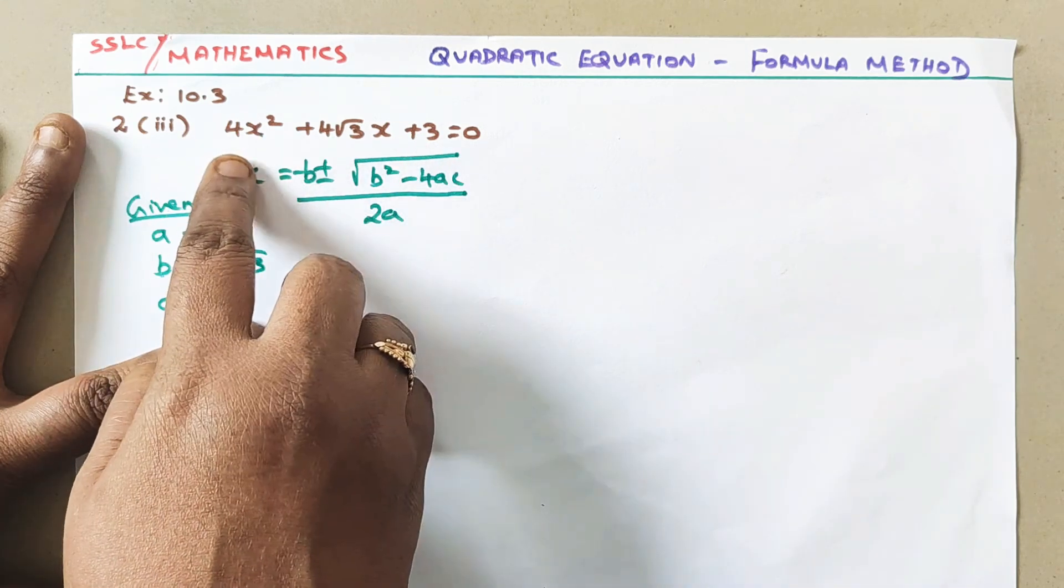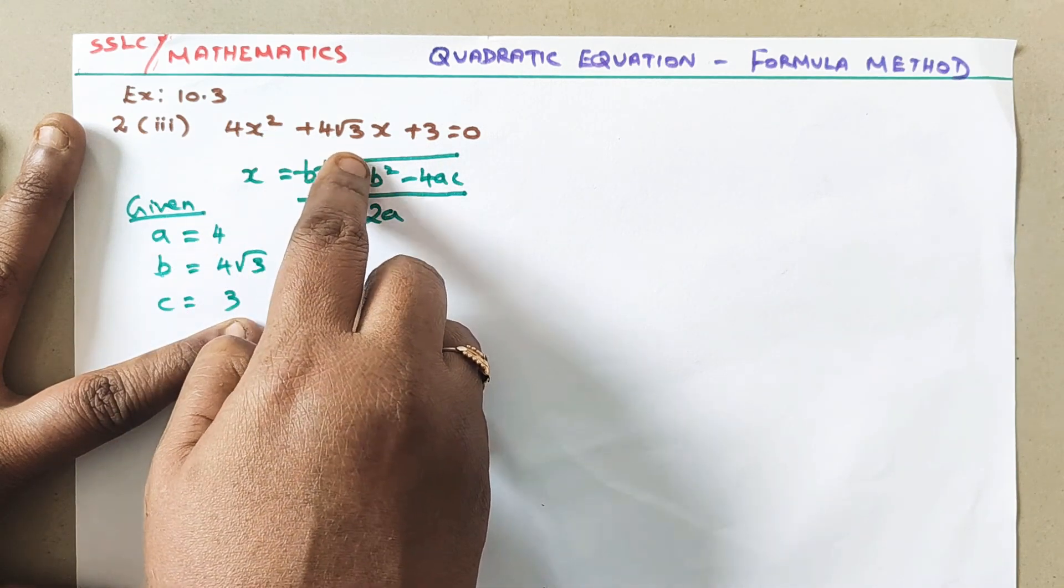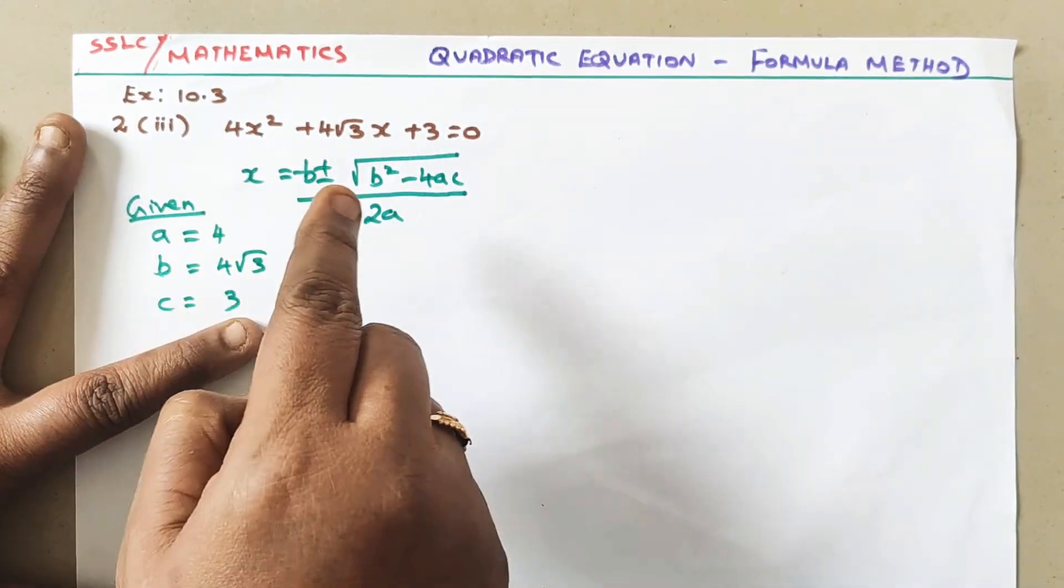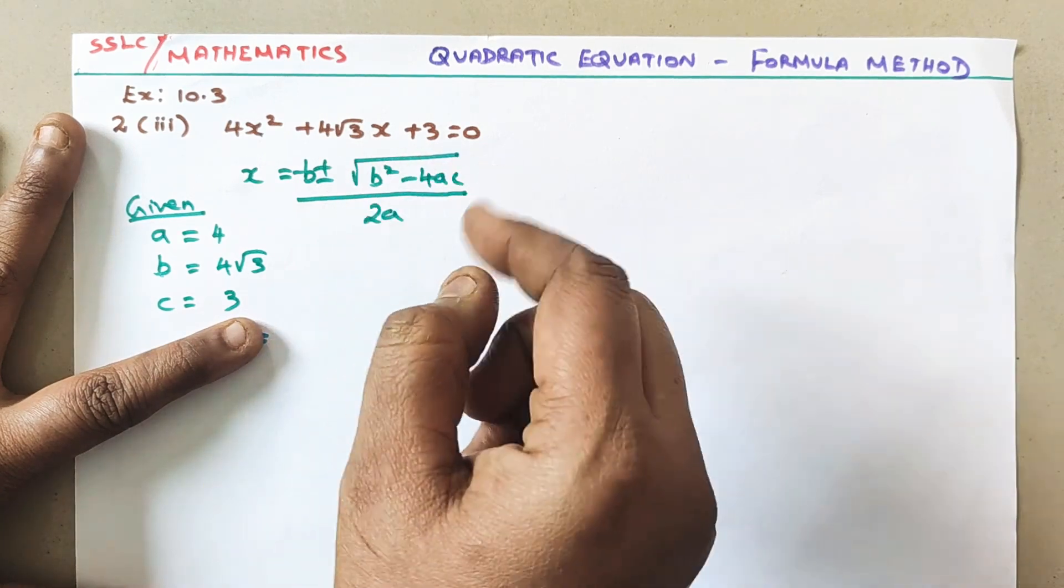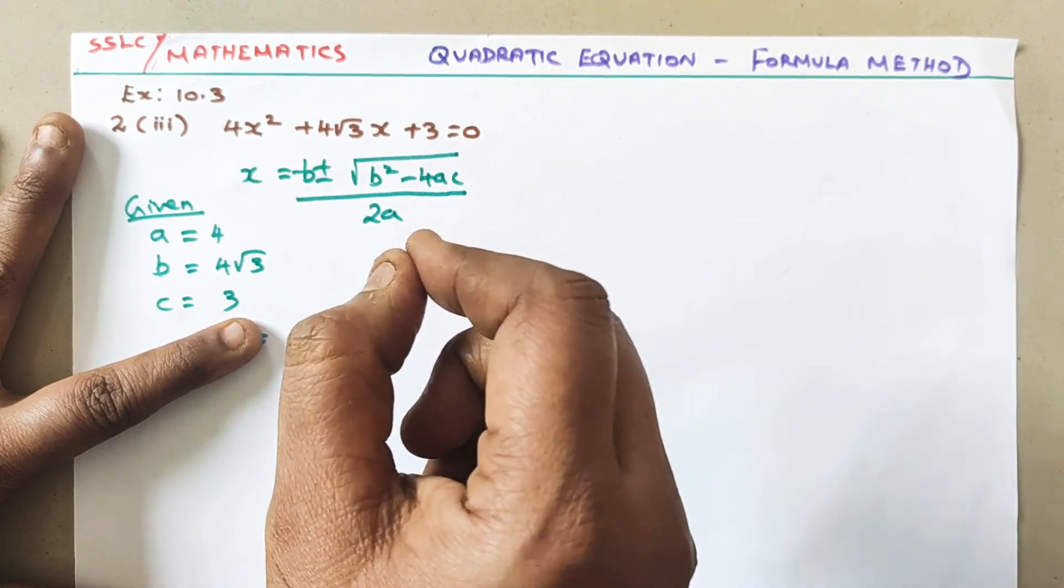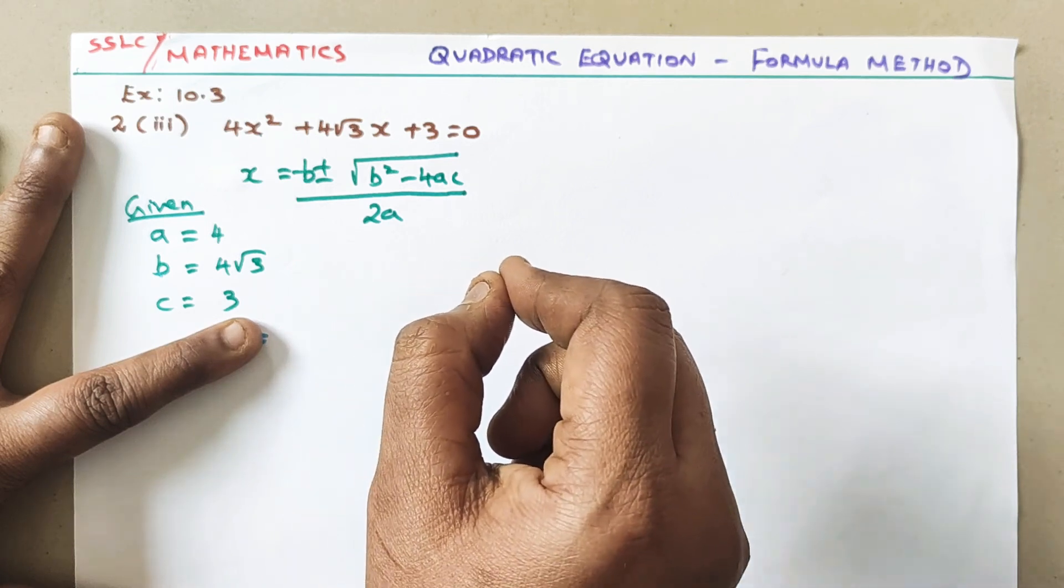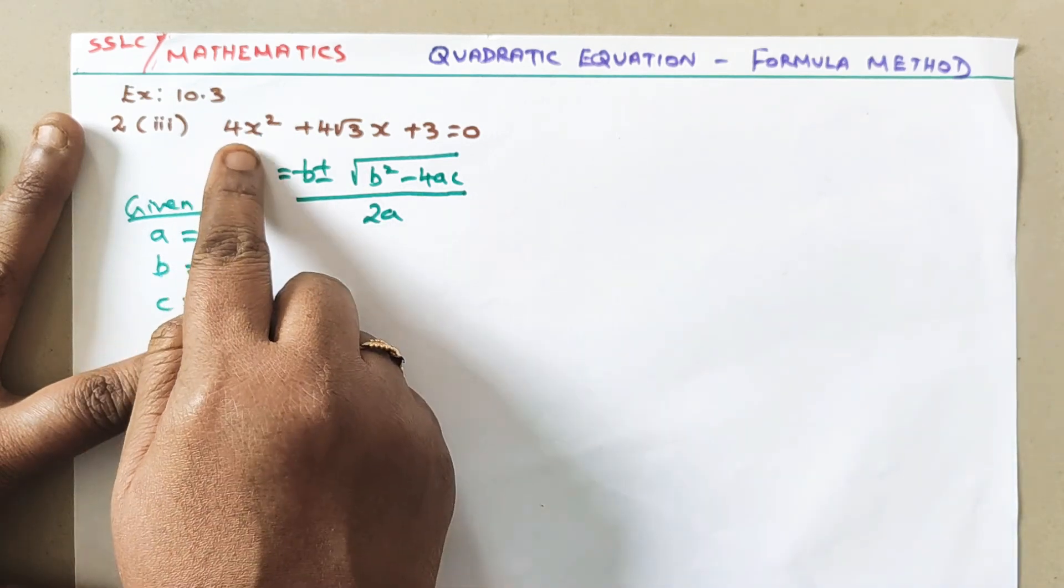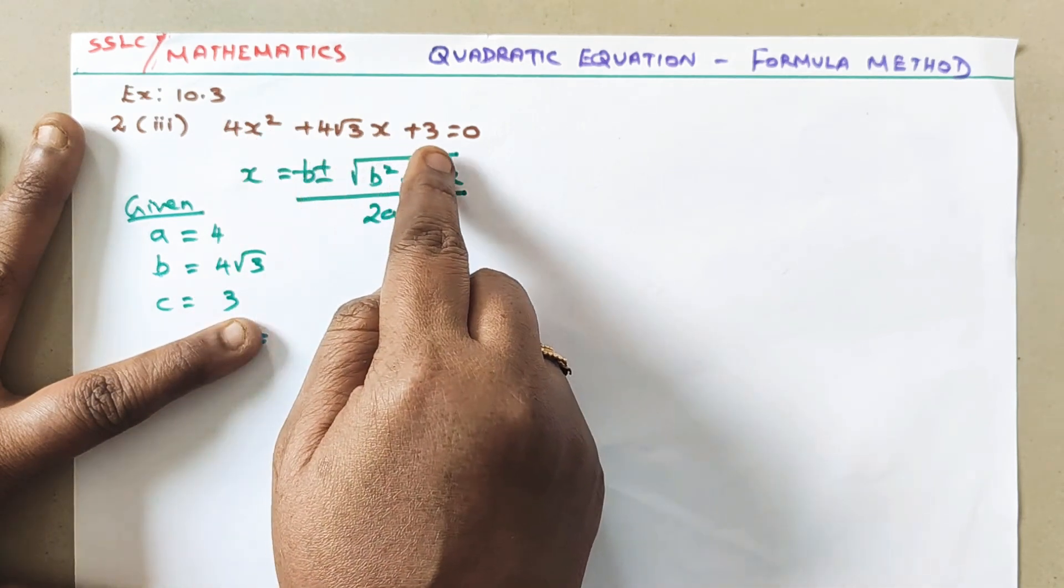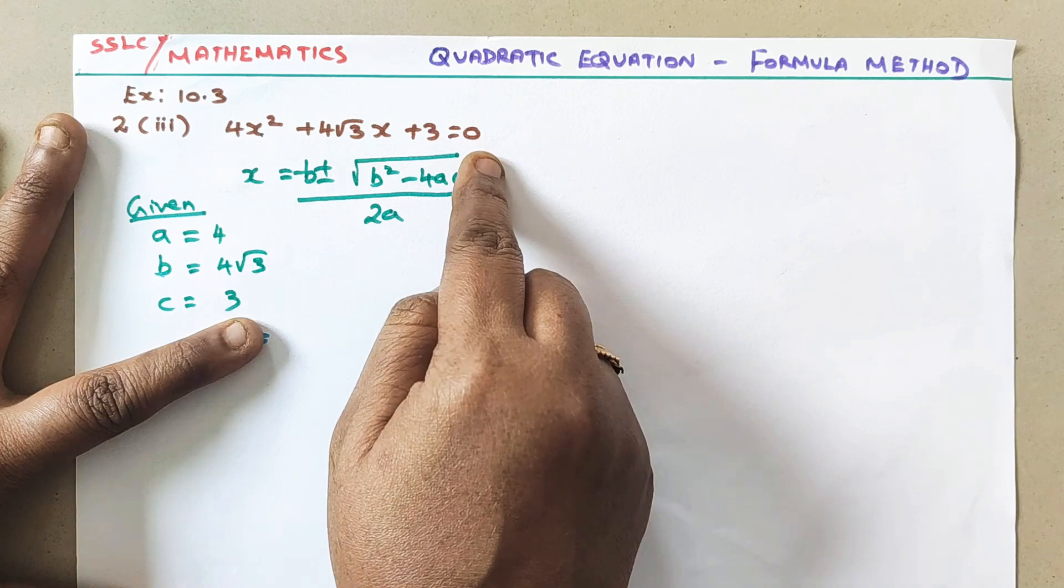Let me read the question: 4x² + 4√3x + 3 = 0. First thing you should check whether it is in order. Order means it should be in the general form of a quadratic equation, that is ax² + bx + c = 0. See here, x² should be first, then the x value, then the constant. Yes, it is in the order.